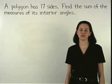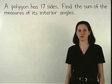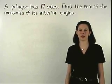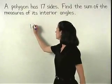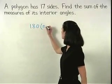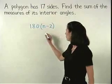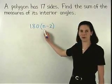Remember that the formula for finding the sum of the measures of the interior angles of a polygon is 180 times n minus 2, where n represents the number of sides.